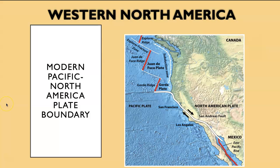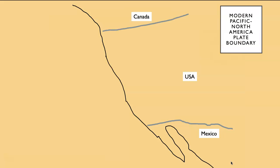Here's a map of the modern Pacific–North American plate boundary from just into Canada down to just into Mexico. The boundary is pretty complicated. I realize you don't have this picture, so I thought we would draw it together. So get out your color pens and pencils, and here we go.